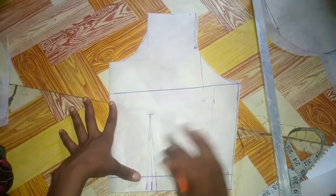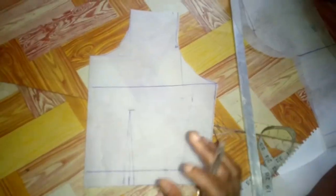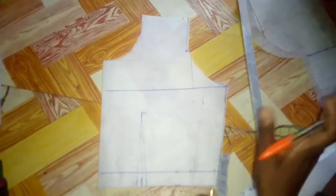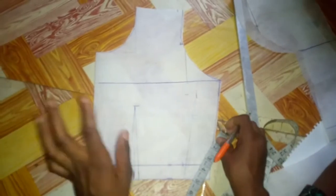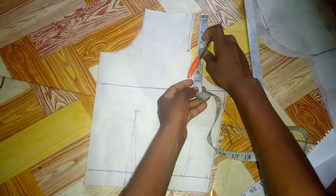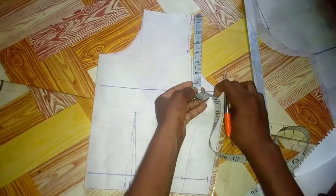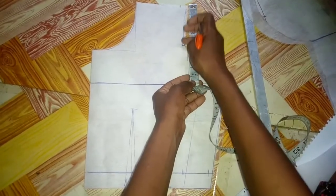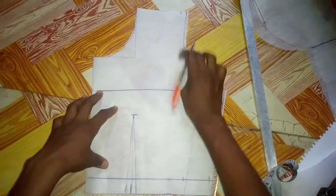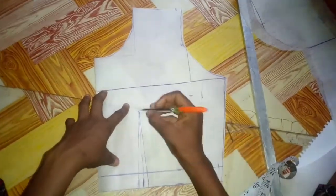So to get your regular princess dart, all you have to do is as simple as ABC. What you have to do is just get the half of your armhole. So half of my armhole is four. See, this is four.